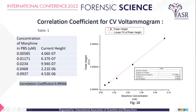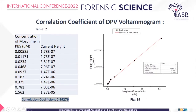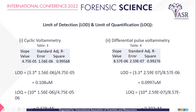I calculated the correlation coefficient for both modes. For CV, five different concentrations were taken into consideration starting from micromolar level, and the correlation coefficient came out to be 0.99568, which is considered quite good. For DPV mode, I could take some more concentrations into consideration, starting from 6 nanomole and then going up to 0.1562 micromole, and the correlation coefficient came out to be 0.99276.